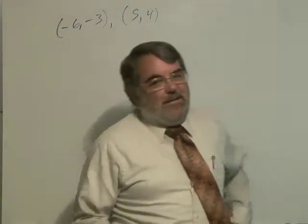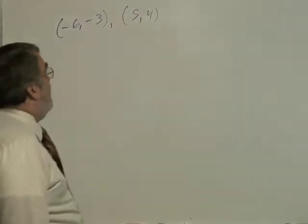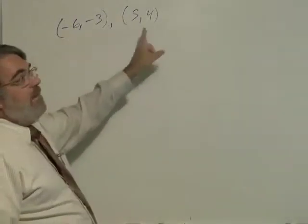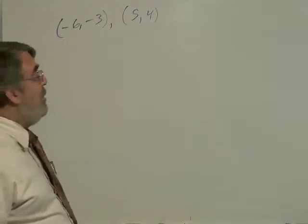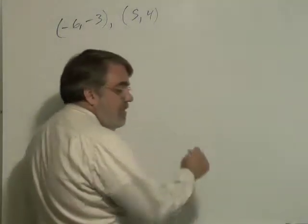Here's problem number 4, another find the equation of line through two points: negative 6, negative 3, and 5 comma 4. Something tells me this one's going to be a bit messier than problem number 3.